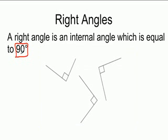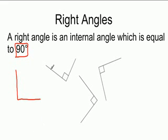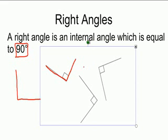Remember that angles that are 90 degrees are usually straight up and straight over. It can be any variation as you can see here — it can be more like a V, because if you rotate it around it would look like it was straight up and down.